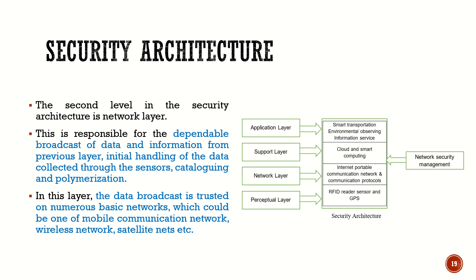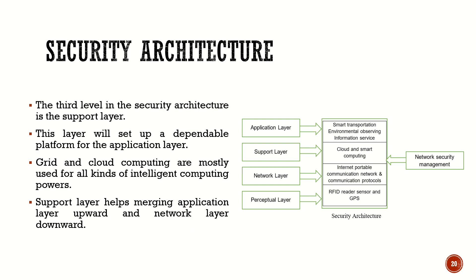The third layer is called the support layer. It acts as a mediator between the upper and lower layers — it is a platform that helps set up the application layer above it and merges the application layer upward with the network layer downward. Here we have grid and cloud computing support, because we need cloud and grid for all the smart computing to be done. The support layer sets up the cloud and smart computing-related bridges and platforms.